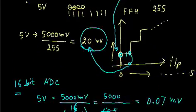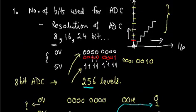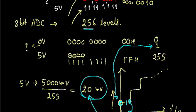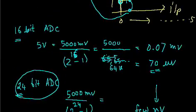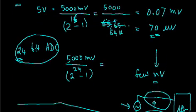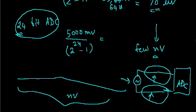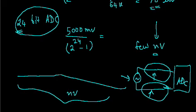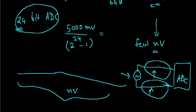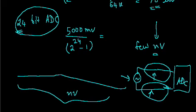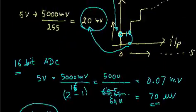So, the aim was to understand resolution, first parameter of A to D converter. Resolution we understood: 8-bit ADC has 256 levels and analog resolution is 20 millivolts. For 16-bit ADC it is nearly 70 microvolts and for 24-bit ADC it is very small. 24-bit ADC is used wherever it is required, but the electrical design becomes complex because we have to take care of lot of things because the noise levels are also of the same order of the signal.